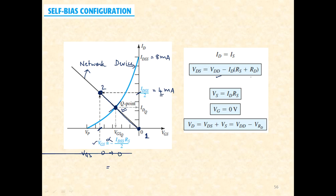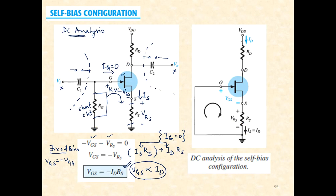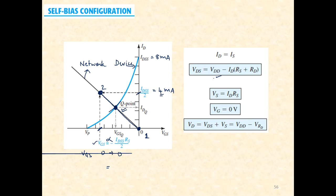Applying KVL to the output loop: VDD equals the drop across RD plus the drop across drain-to-source plus the drop across RS, giving VDS equals VDD minus ID·(RD plus RS). VS equals ID·RS, VG is 0 because IG is 0, and VD can be obtained from these expressions.